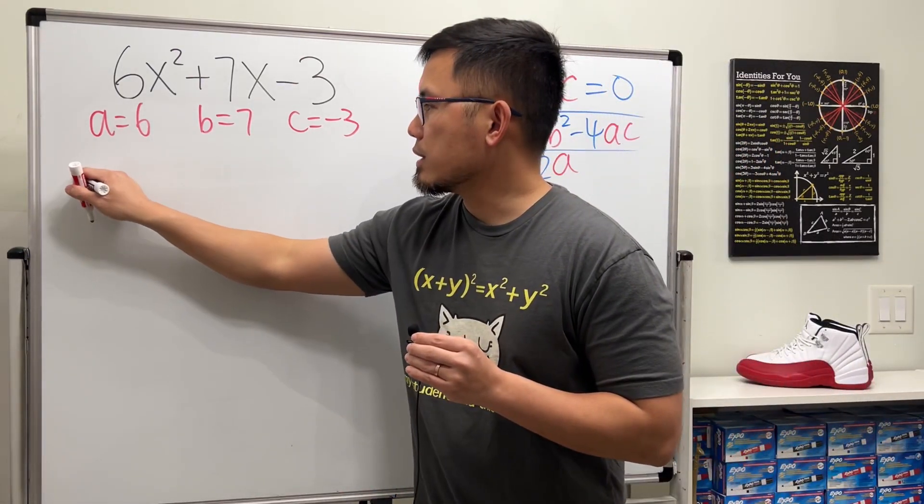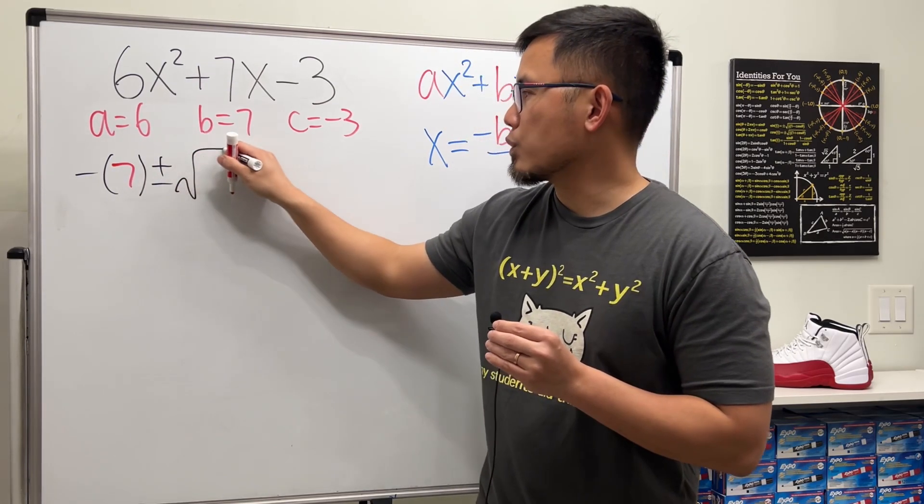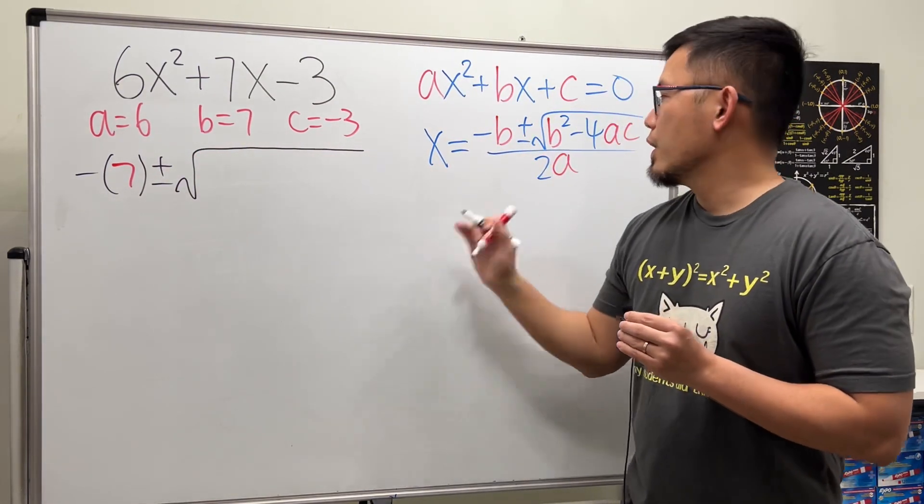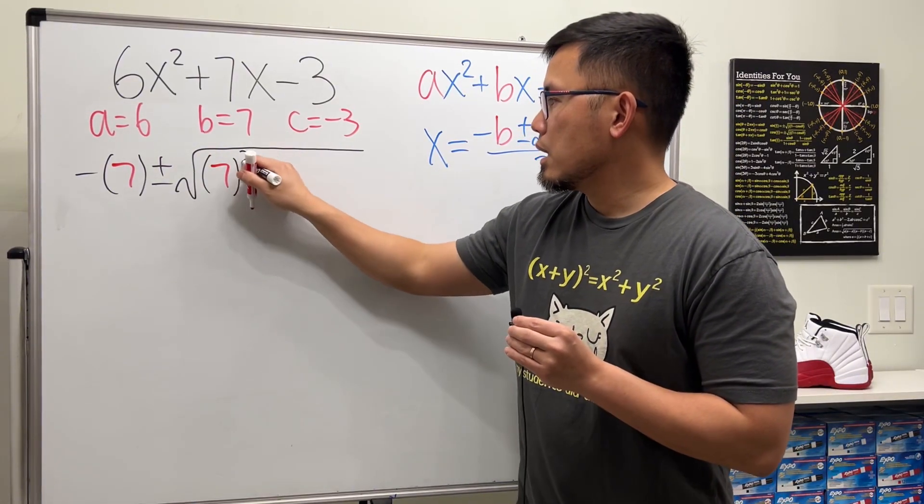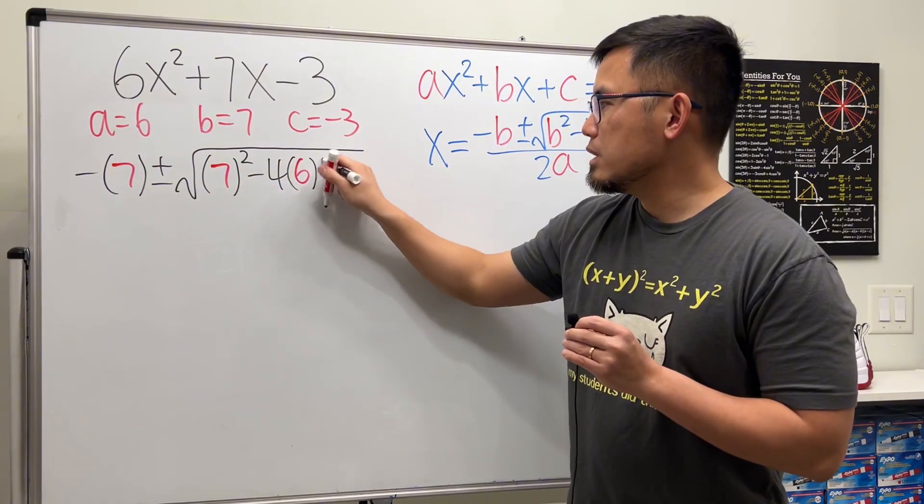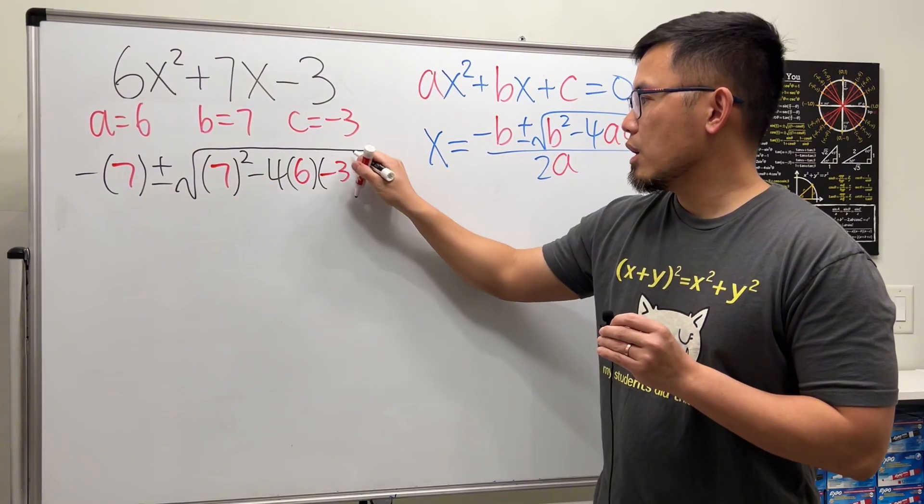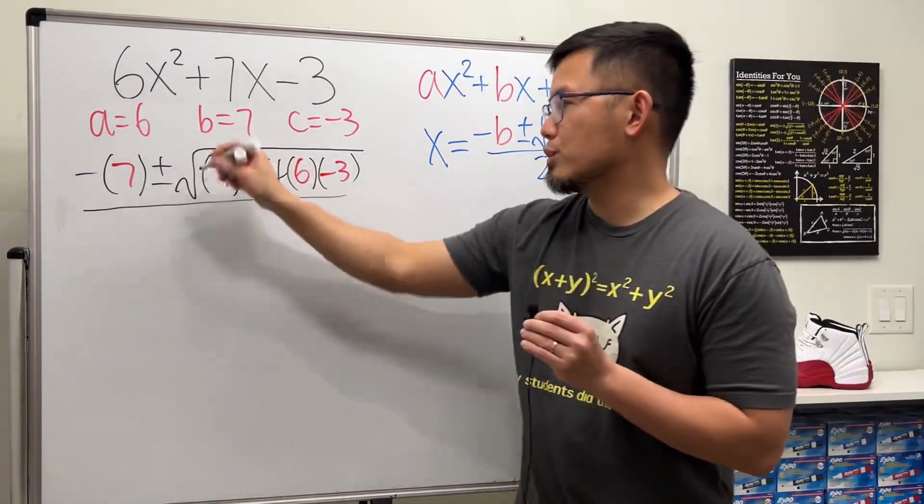We have negative b, so that's negative 7. And then plus or minus, open the square root. We have to do b squared, which is 7 squared, minus 4 times a, which is 6, and then times c, which is negative 3, all over 2 times a, which is 2 times 6.